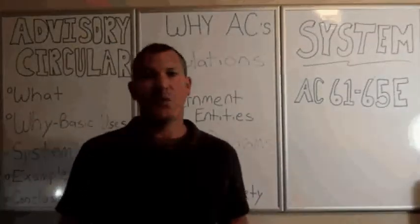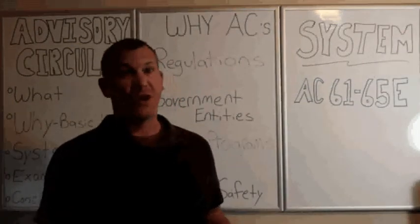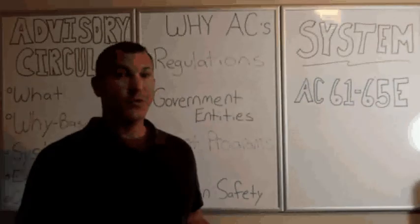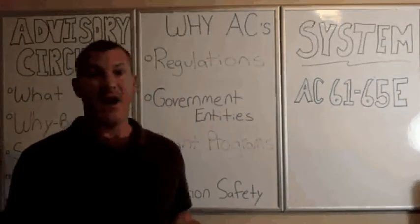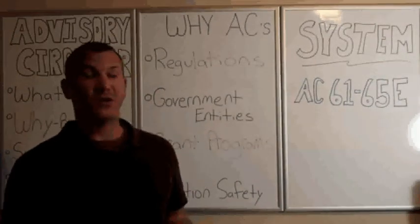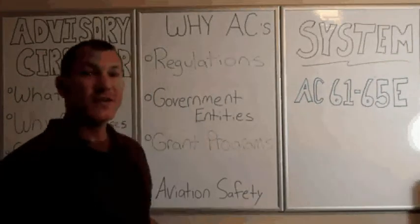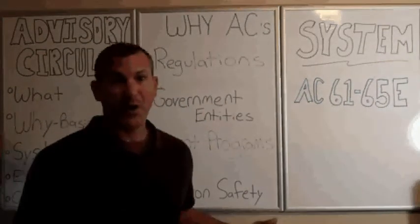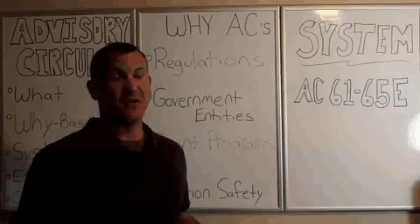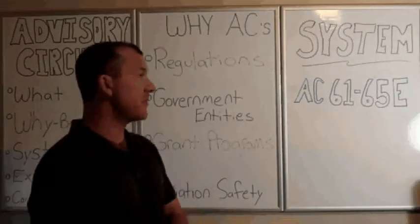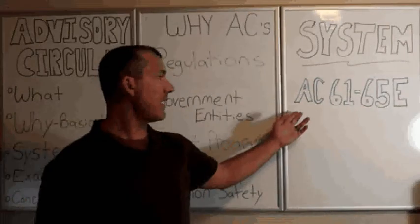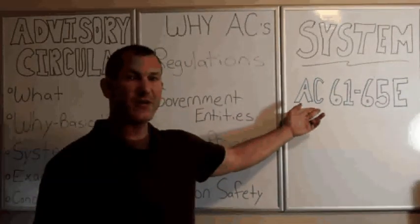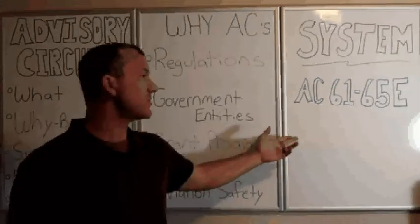So now that we understand what an advisory circular is and why an advisory circular might be published, we really need to understand how to look one up if we're looking for a particular topic. Well, the advisory circular system has a specific naming convention that will help us understand basically what's covered and how current the information is. So in this example I've put on the board, we've got AC for advisory circular, and that's the start of all advisory circulars.